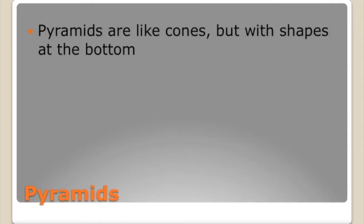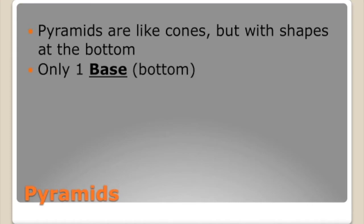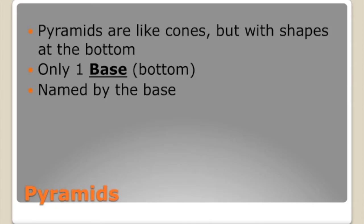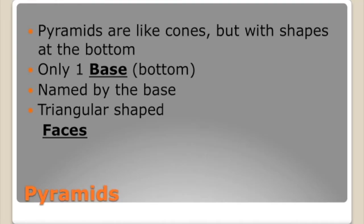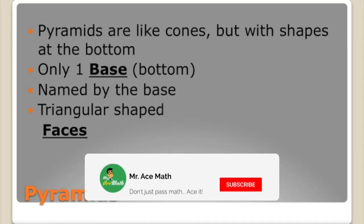Whereas prisms are like cylinders, pyramids are very similar to cones. But the only difference is that they don't have a circle at the bottom — they have a shape at the bottom. They only have one base. Same as with the prism, a pyramid is named by the base. And it has triangular-shaped faces. Prisms had rectangular-shaped faces, but pyramids have triangular-shaped faces — that's what makes them very different.